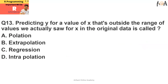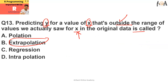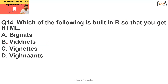Question number 13: predicting Y for a value of X that is outside the range of values we observed for X in the original data is called what? This is called extrapolation. If predicting Y for a value of X that is inside the range, that is called interpolation. But since it is outside the range, option B — extrapolation — is the correct answer.